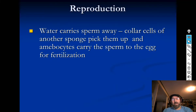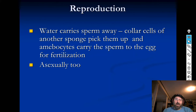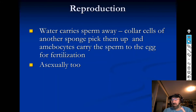For reproduction, water carries the sperm away. Collar cells of another sponge pick them up, and amoebocytes carry them to the egg for fertilization. Then they make baby sponges that go off into the water column, settle down, and become an adult sponge. Sponges can also reproduce asexually — they can bud — which means just one sponge can make other sponges.